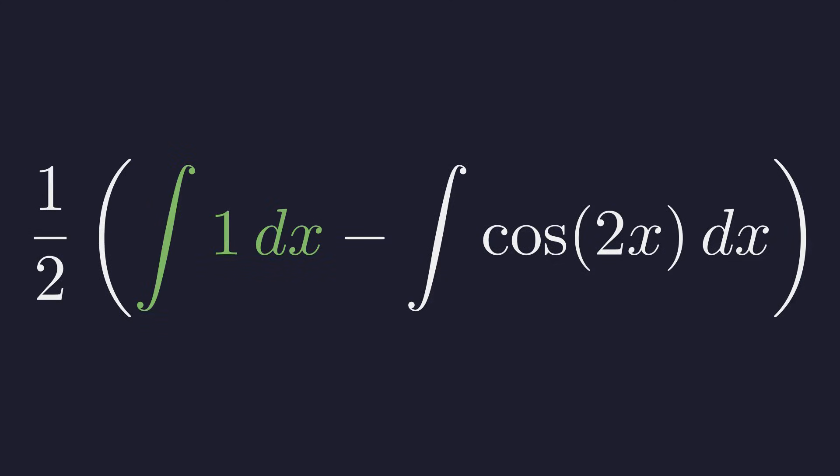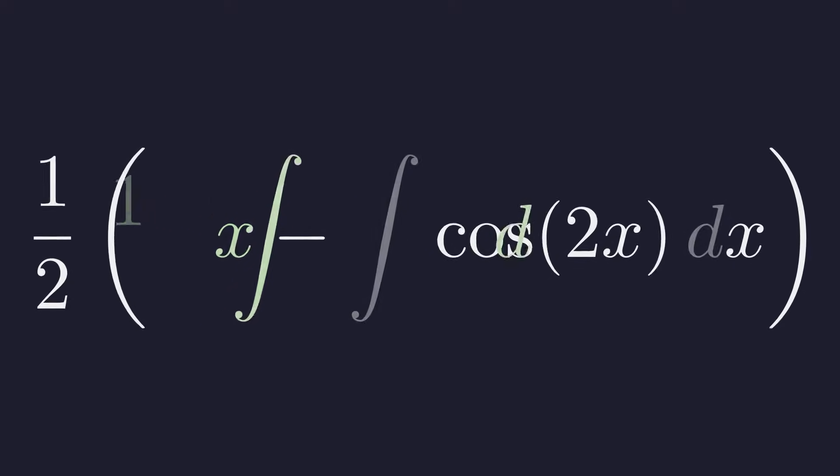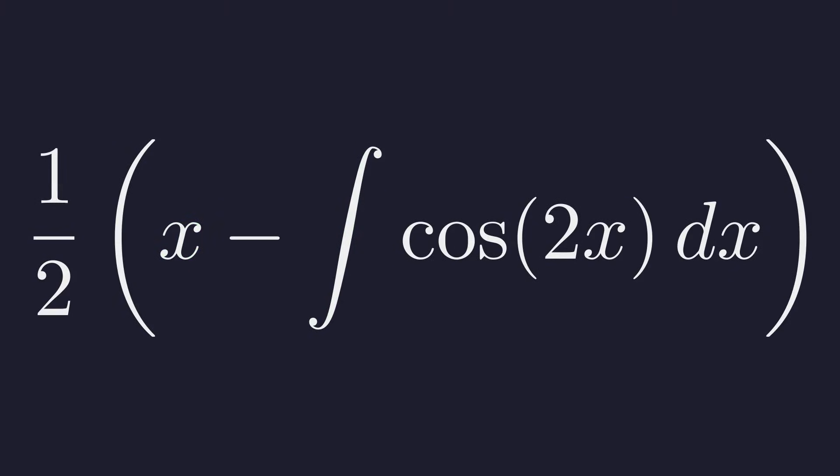The first part, the integral of 1 with respect to x is straightforward. It simply evaluates to x. This leaves us with the integral of cosine of 2x.